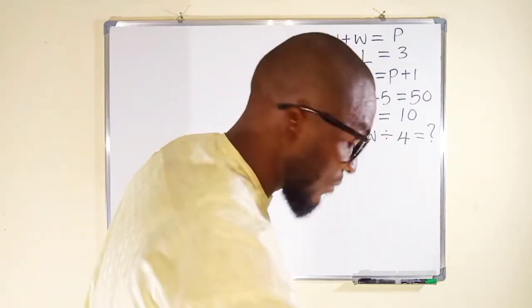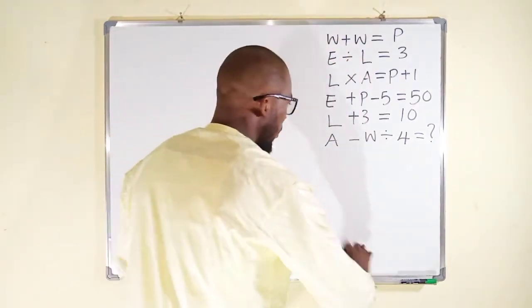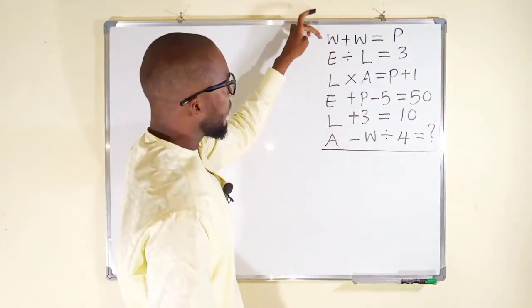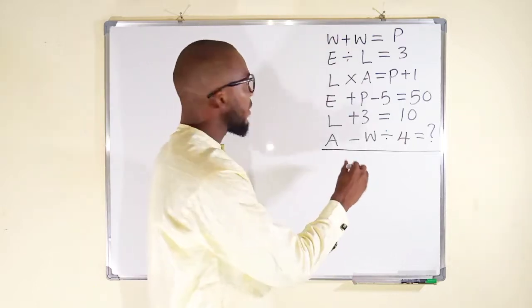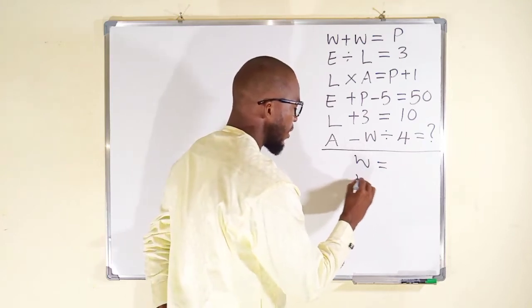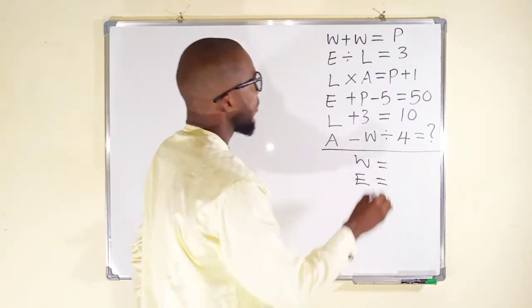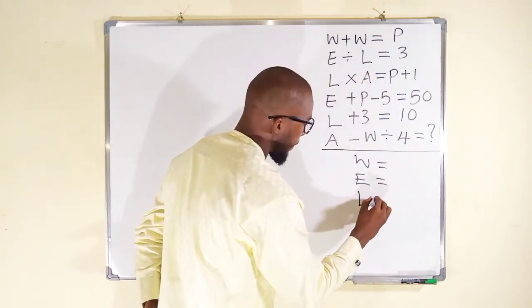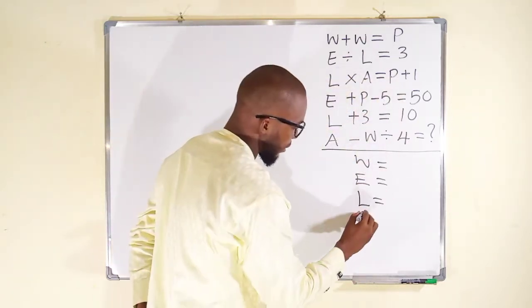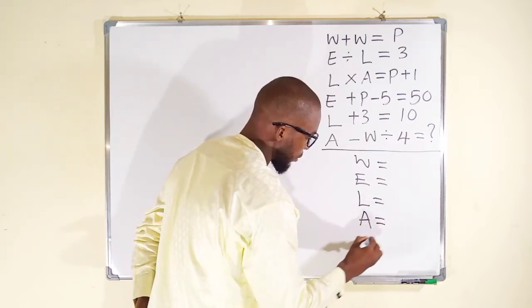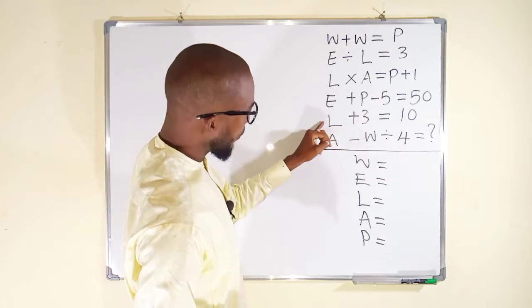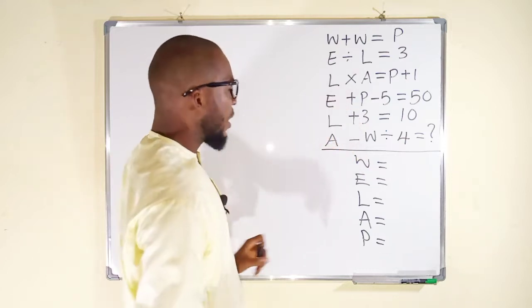So let's start. What we are looking for: W, E, L, A, P. So let me bring them here. We want to find out the value. We have W, E, L, A. All right, let's begin.